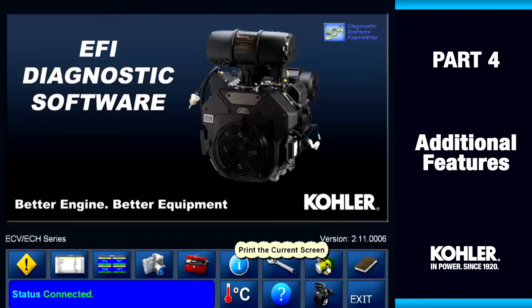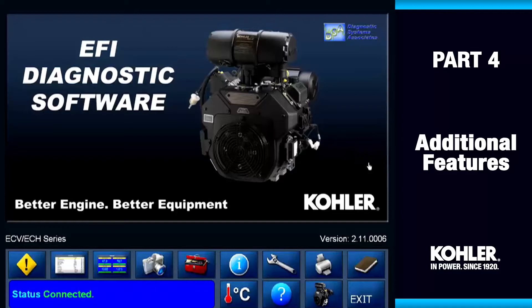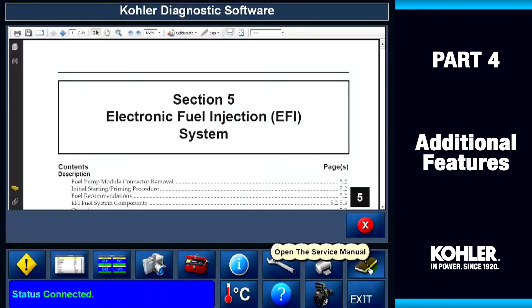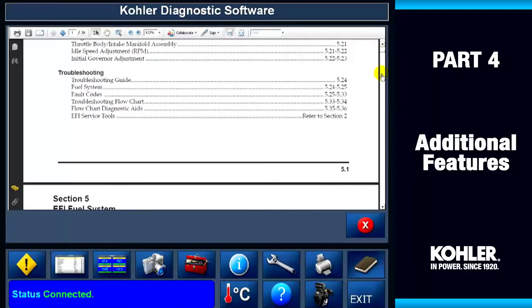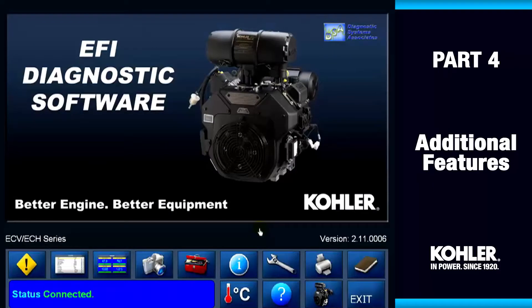Here's the Print button to use when printing reports. This is the Service Manual icon — the Service Manual is a browser that gives you access to the appropriate Kohler Factory Service Manuals. This is the Units Selection button; use it to select your units of measure for engine temperature and pressure.